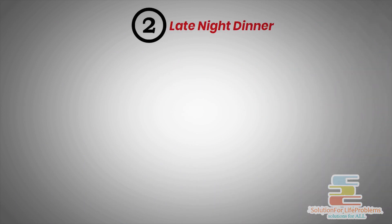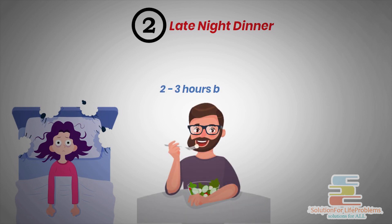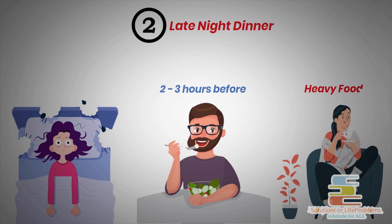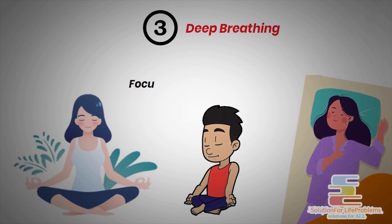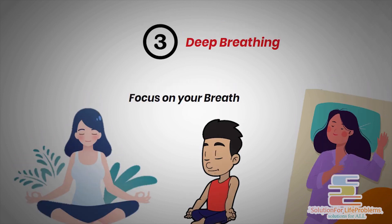Number 2, late night dinners disturb the sleep cycle. So dinner should be done 2 to 3 hours before sleeping. Also, avoid caffeine and heavy food at night. Number 3, deep breathing for 5 minutes can make you calm and induce sleep. You can just close your eyes and focus on your breath to relax your mind.